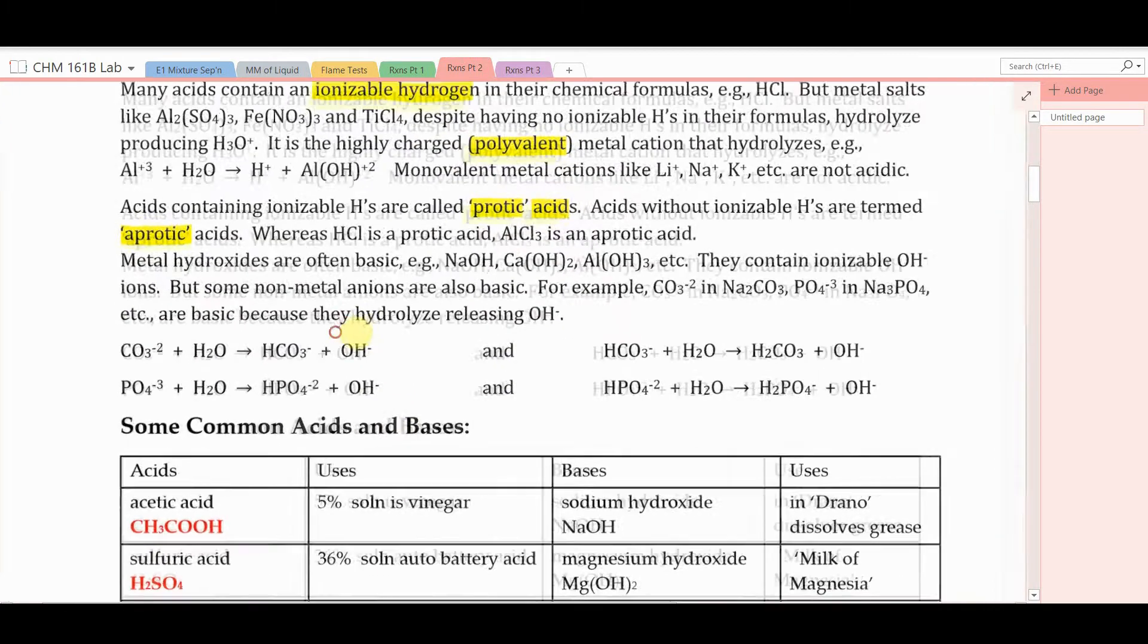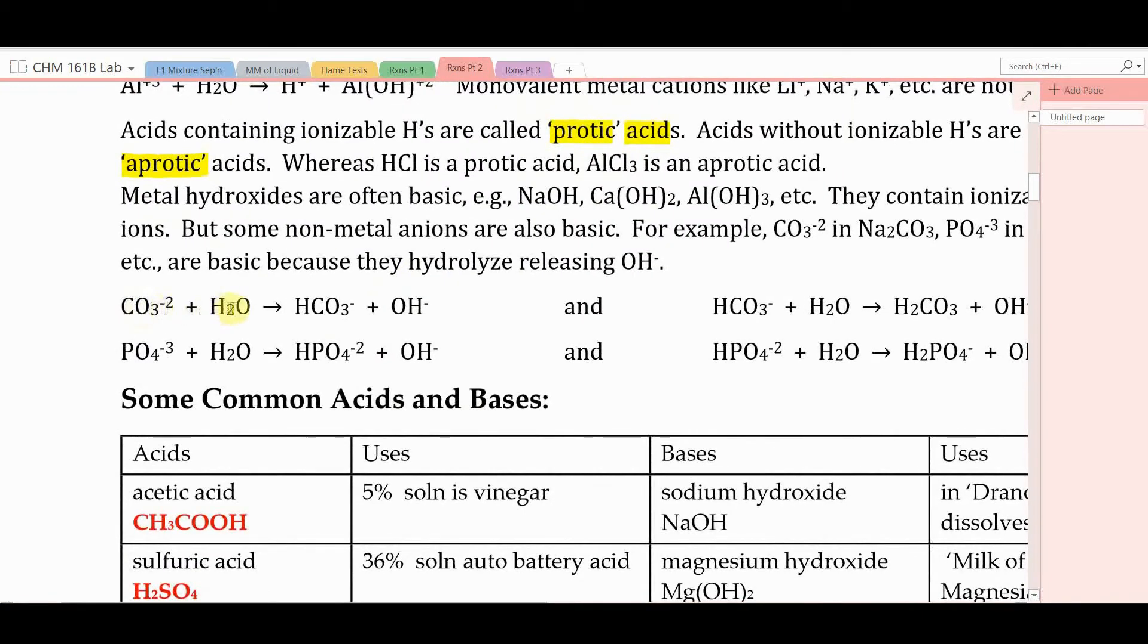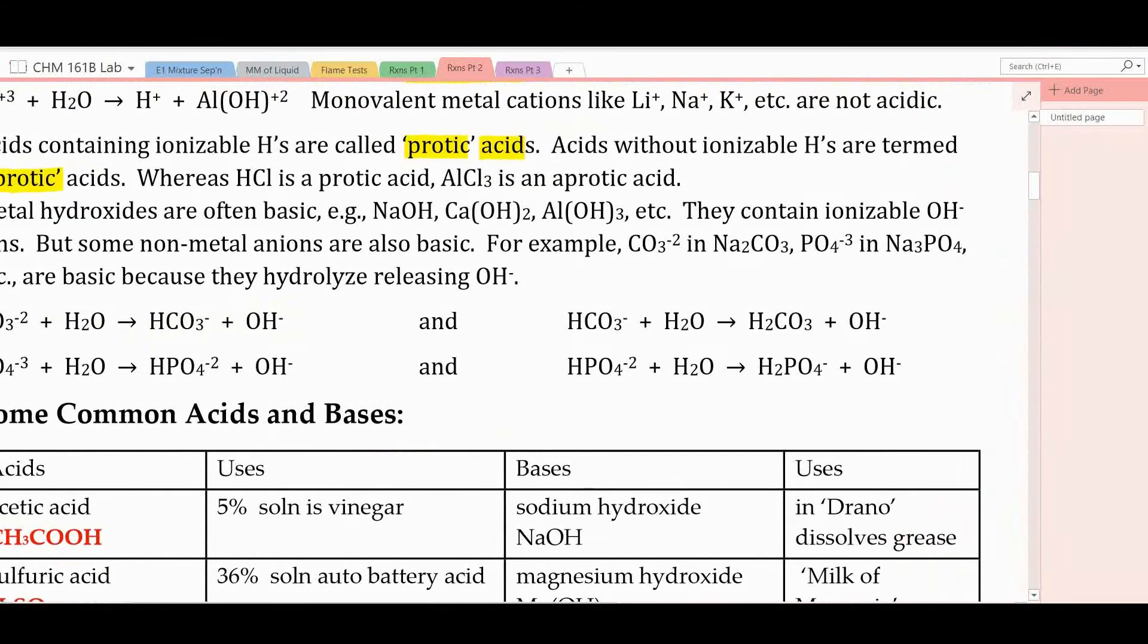They're basic because they hydrolyze releasing hydroxide anion. So for example, carbonate in water releases hydroxide ion and does so by tying up or binding a hydrogen ion from water producing bicarbonate. Now bicarbonate is a weak base and it will react with water to a small extent to produce another hydroxide ion by binding one of the hydrogen ions from the water producing carbonic acid.